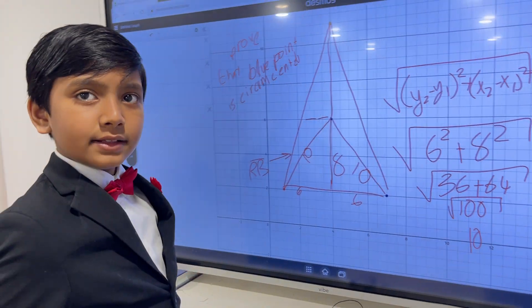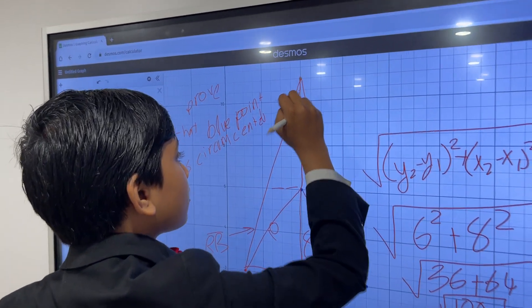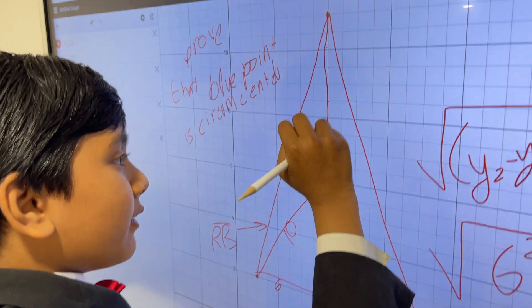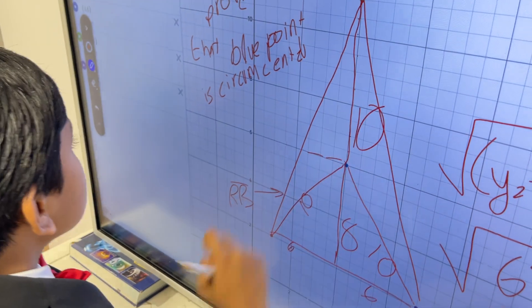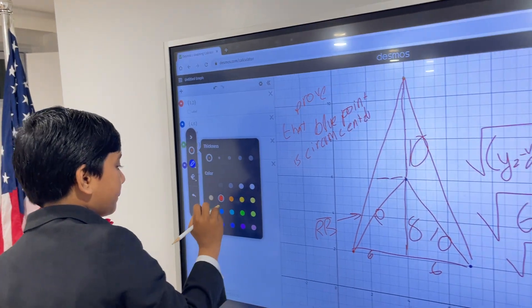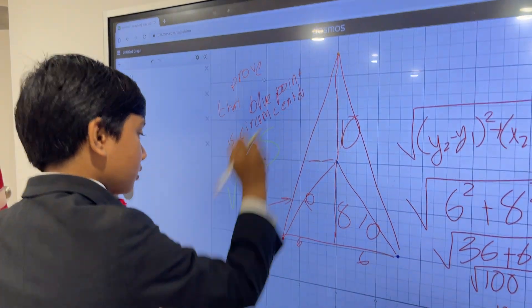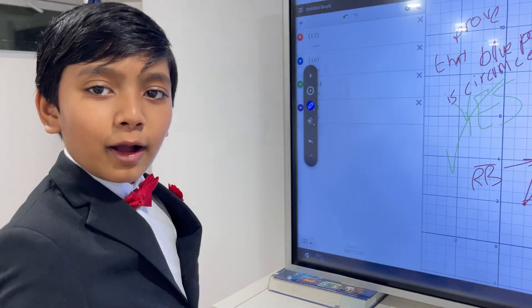But what about the final side? Well, let's count it up. 0, 1, 2, 3, 4, 5, 6, 7, 8, 9, 10. So the blue point must be the circle of center. So that is the answer to our problem. Thank you everybody for watching.